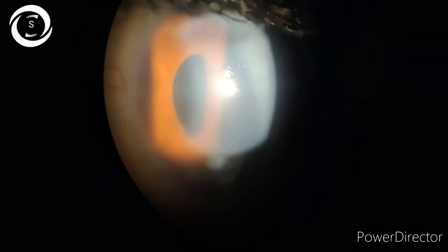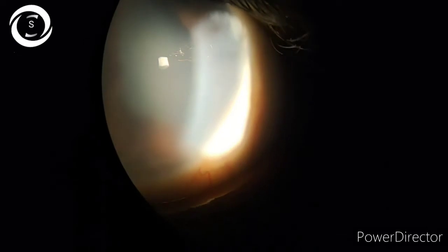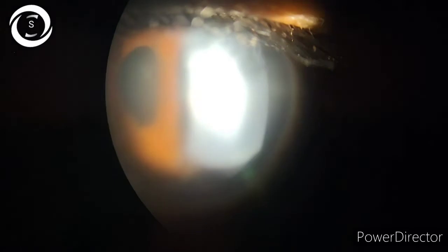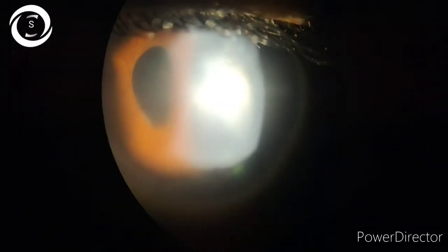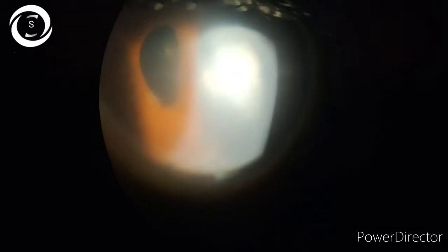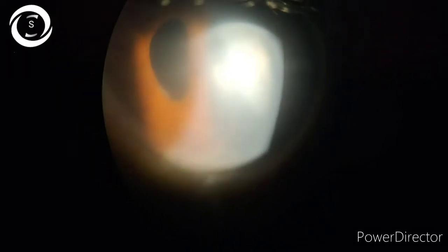Clinically, the corneal endothelium has beaten bronze or hammered silver appearance. Corneal edema is due to raised intraocular pressure as well as abnormal endothelial cell pump function. It should be considered in any young patient with unilateral glaucoma, corneal decompensation, and iris atrophic changes like in our patient.